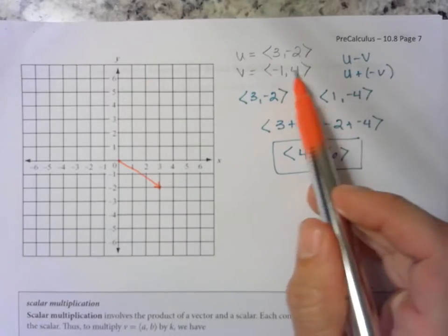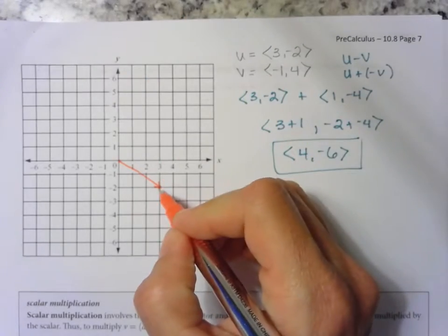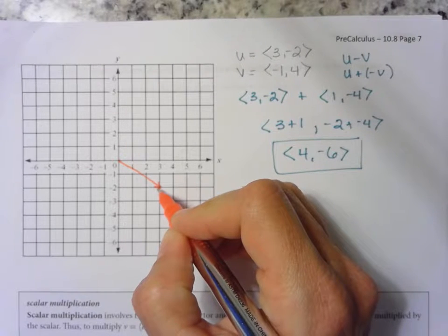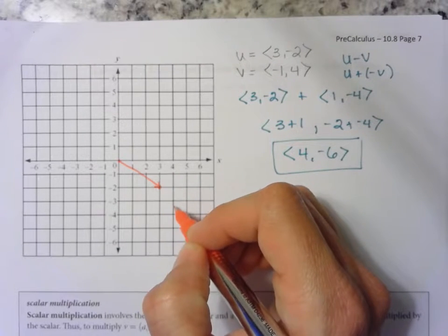And then we want to add the opposite of this one. So if we add the opposite of that one, that would be <1, -4>.